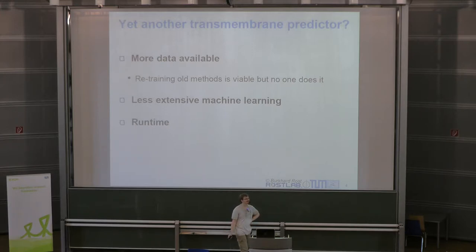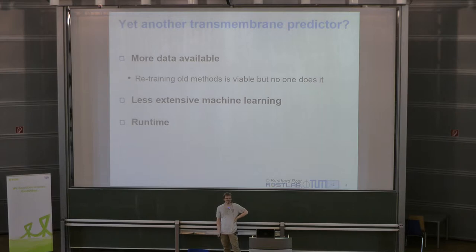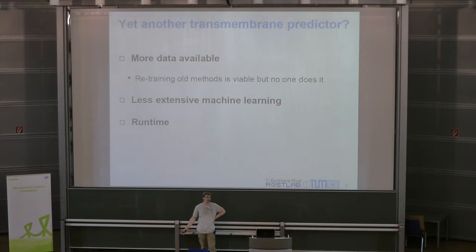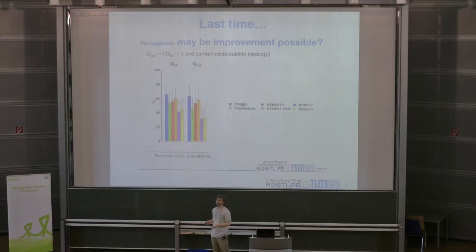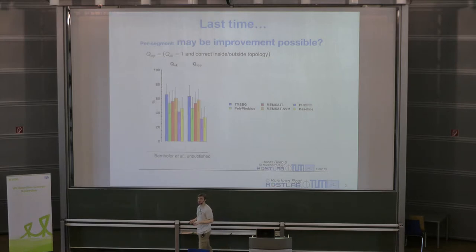Machine learning algorithms have gotten better, faster, and more efficient, and nowadays we have more computing power, so you can make more complex algorithms than a few years ago. Another issue is the runtime of those methods. For example, MEMSAT takes around five minutes per protein, and if you want to predict the human proteome of 20,000 proteins, you can do the math on how long that takes.